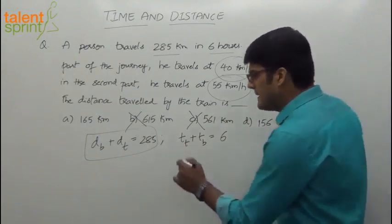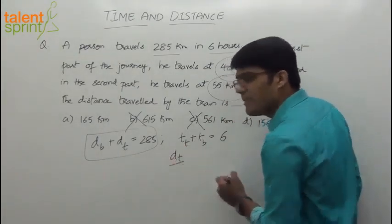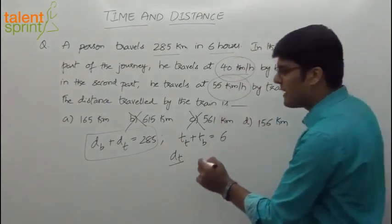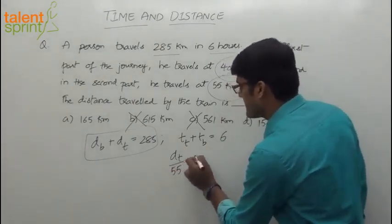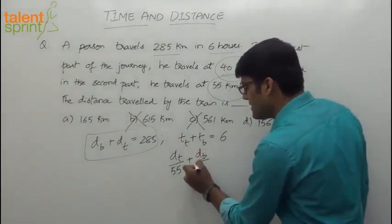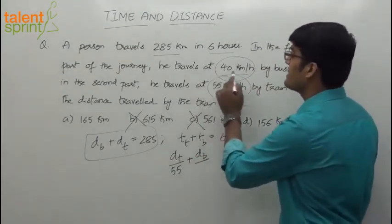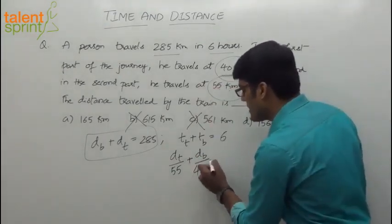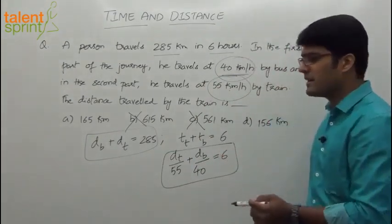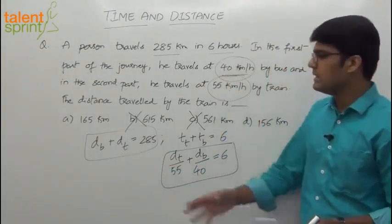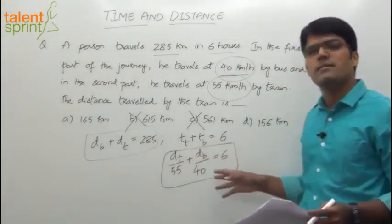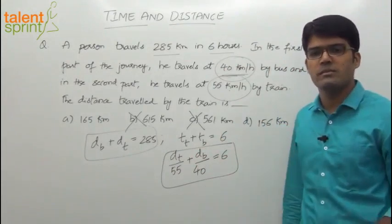So time taken by train can be taken as distance traveled by train divided by speed of train, which is 55, plus time taken by bus, which is distance traveled by bus divided by the speed of bus, which is 40 kilometers per hour. This is equal to 6. Now if you observe, we have got two equations and two variables. Two equations, two variables you can solve.